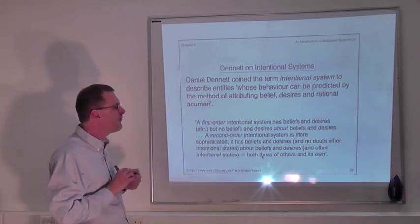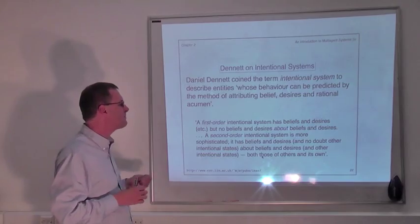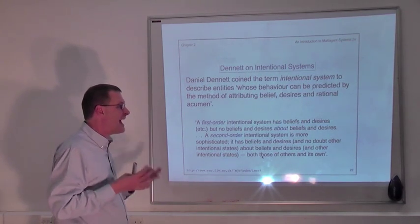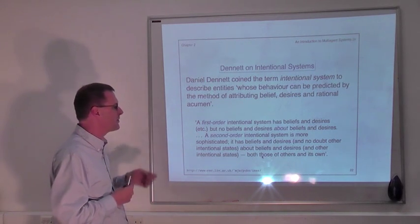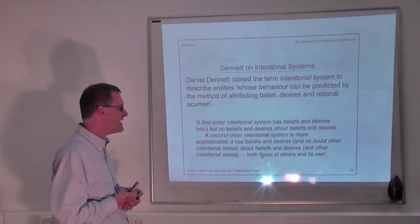So here's a quote from Daniel Dennett. A first order intentional system has beliefs and desires, but it has no beliefs and desires about beliefs and desires. A second order intentional system, in contrast, is more sophisticated.